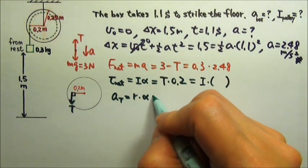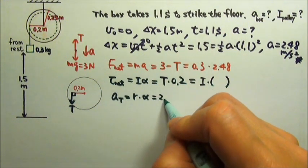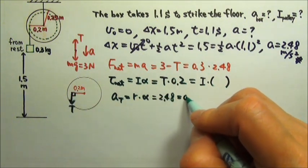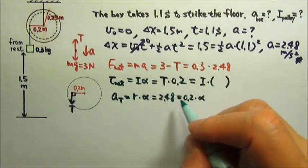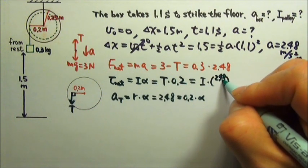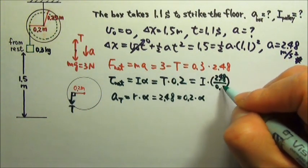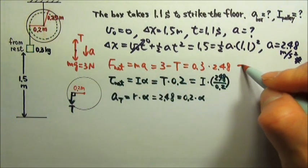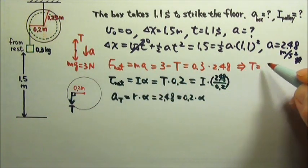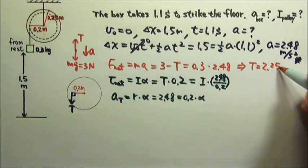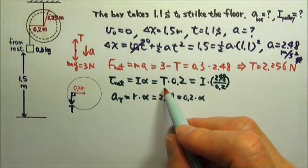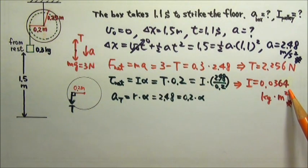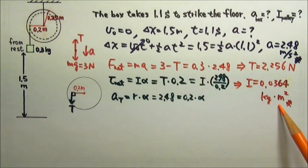And the tangential acceleration in this case is 2.48, and the r, the radius, is 0.2. So α is 2.48 divided by 0.2. So from this force equation, we can find that the tension equals 2.256 newtons. And then we can plug the tension in here, and we'll get the rotational inertia is 0.0364 kilograms meters squared.